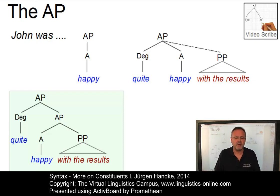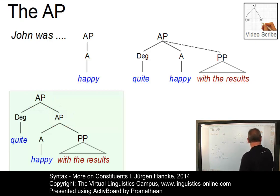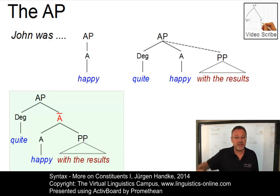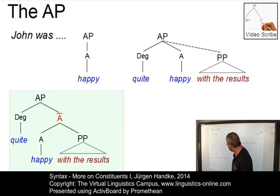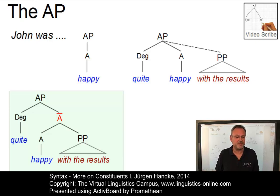The problem, however, is now that we have two nodes labeled adjectival phrase. To avoid this problem, it was suggested to call the intermediate node 'adjective bar.' You know this sort of labeling from maths, where you have a derived element from x called x-bar. So, A-bar is now an intermediate constituent between adjectival phrase and the head, the adjective. It is an intermediate constituent derived from the head. So much for adjectives.